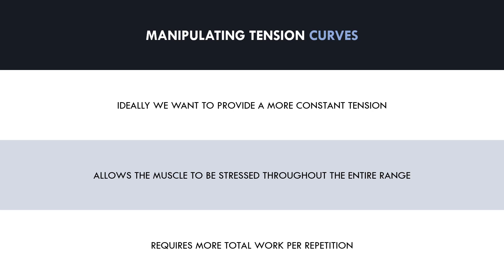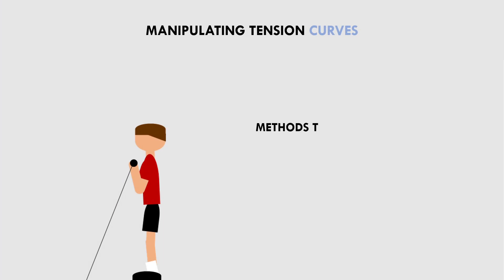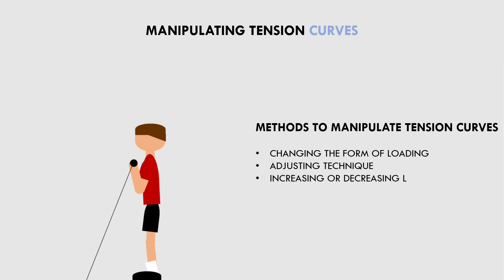There are many different ways to achieve a more constant tension for exercises which have a drastic tension curve. Some methods include changing the form of external load, adjusting technique, increasing or decreasing load, changing body position, using different attachments, or using bands and chains. The way that you manipulate an exercise is specific to that exercise and what muscle you want to target. Let's cover some example exercises and explore how we can manipulate them to provide a more constant tension on the target muscle.